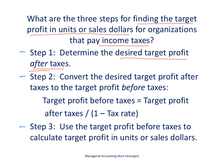The second step is to convert the desired target profit after taxes to the target profit before taxes. The before-tax number is going to be higher because we're going to have to pay some taxes. The way to figure out the target profit before taxes is to take the target profit after taxes and divide by 1 minus the tax rate. On the next slide we'll take a look at how best to do that.